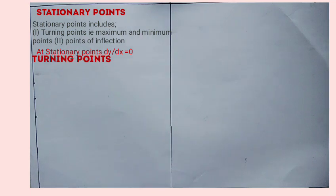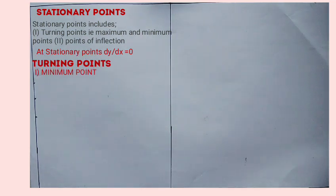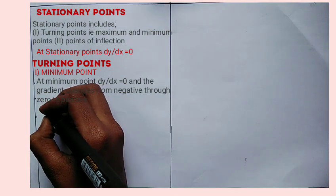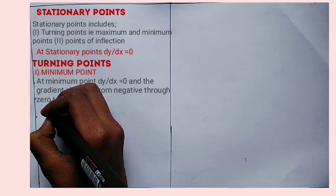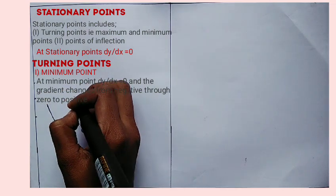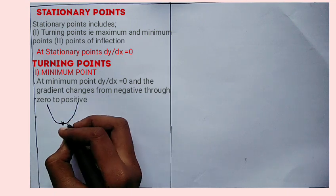We will start with turning points. Under turning points, we will start with the minimum point. At the minimum point, dy over dx is 0, and the gradient changes from negative through 0 to positive. An example is the curve shown here — this is your minimum point.